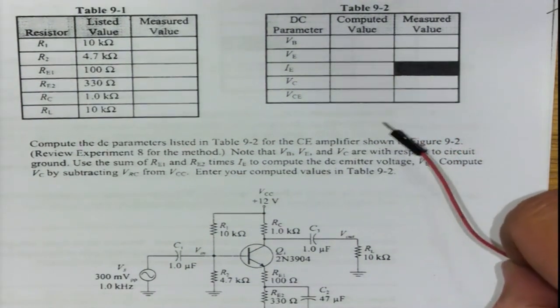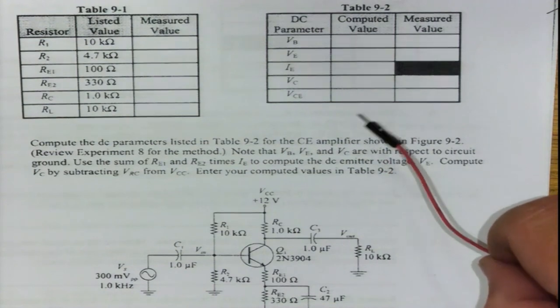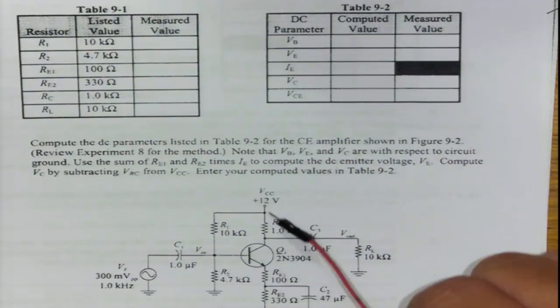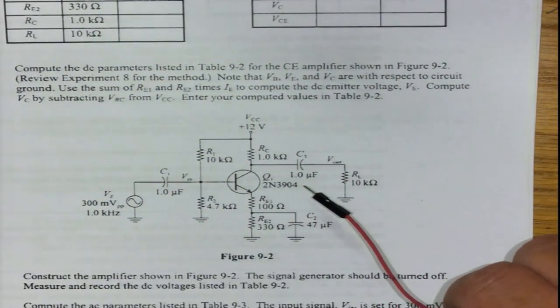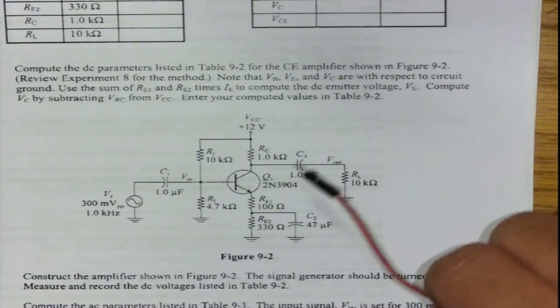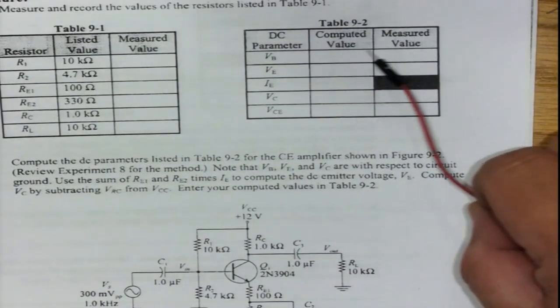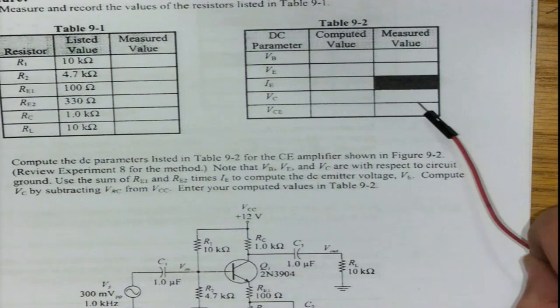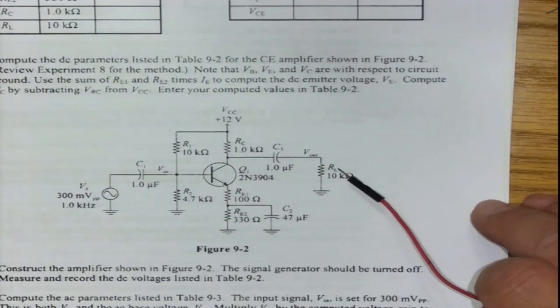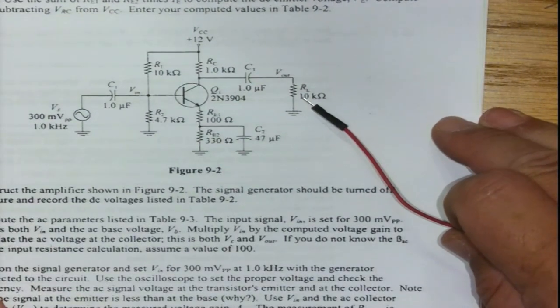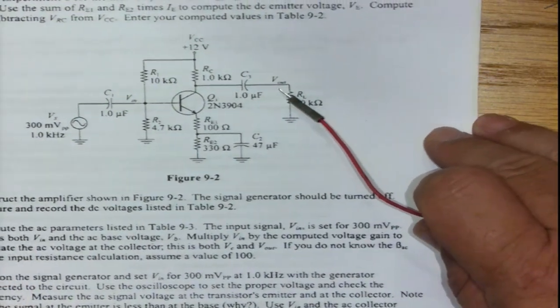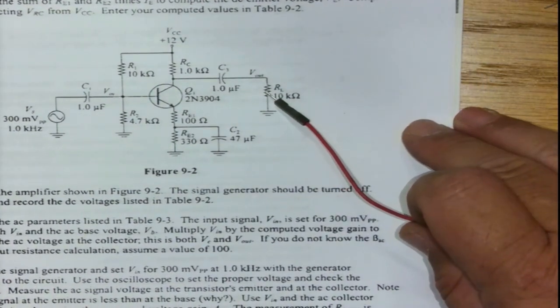And once you know that, the measurements can be or that results can be written down into table 9.2. That gives me a reference. It gives me something to strive towards. It gives me something to compare my physical measurements that I will actually have. And once I've compared these two values here, I know whether my circuit is working quickly or not. So that's the reasoning behind this process.